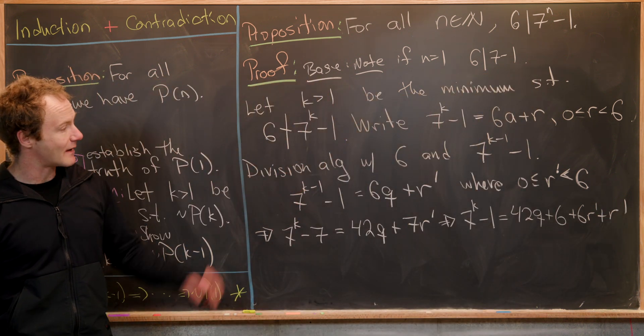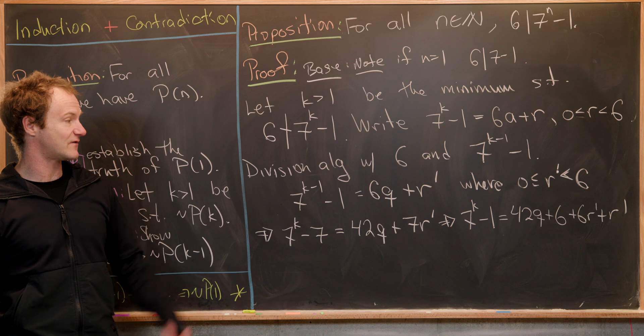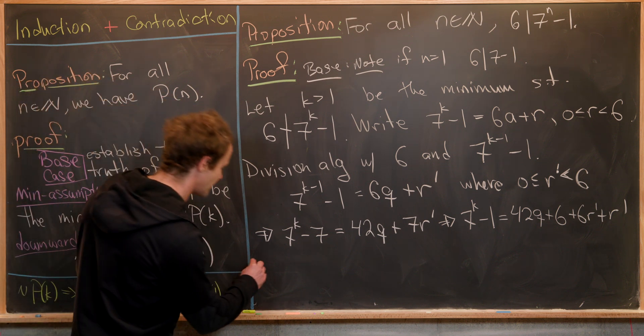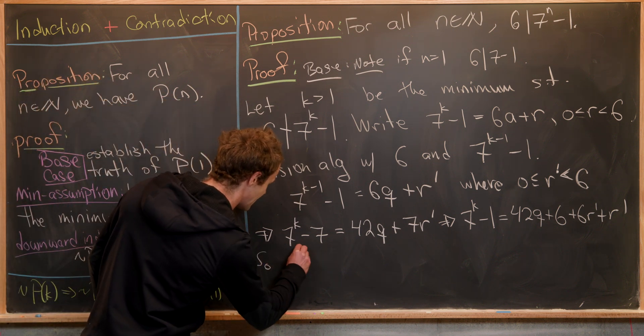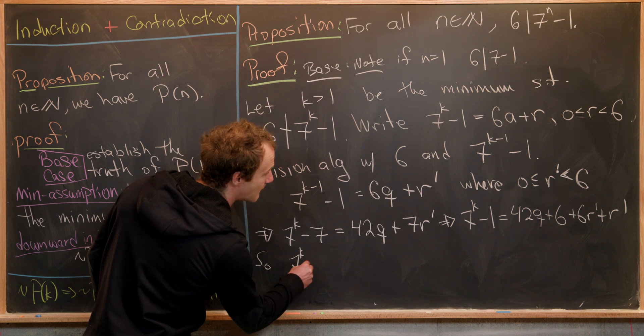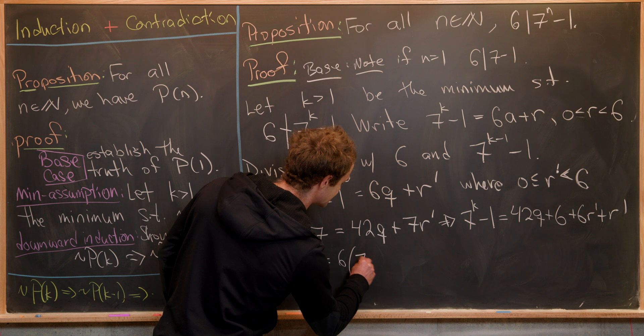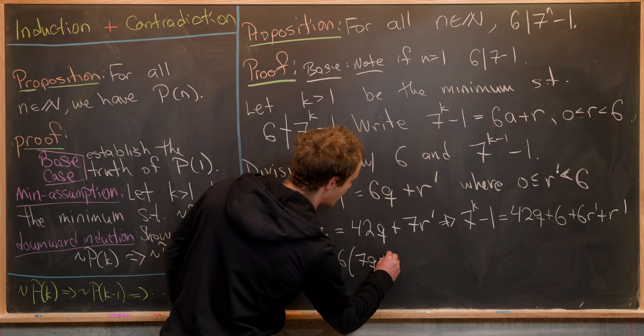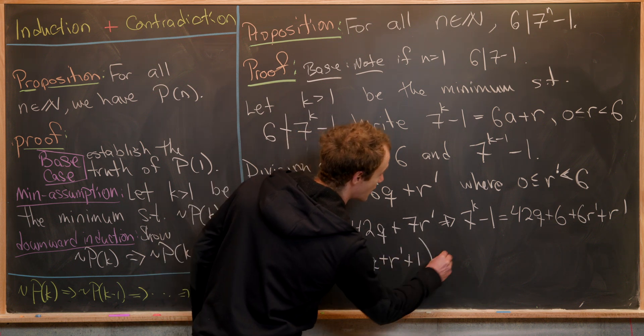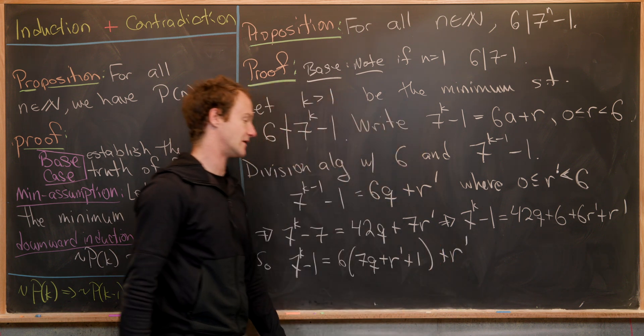Now I'm going to write this as 42q plus six plus six r prime plus r prime. Why? So I can factor a six out of a bunch of stuff. That gives us seven to the k minus one equals six times the quantity seven q plus r prime plus one, and then plus r prime outside.